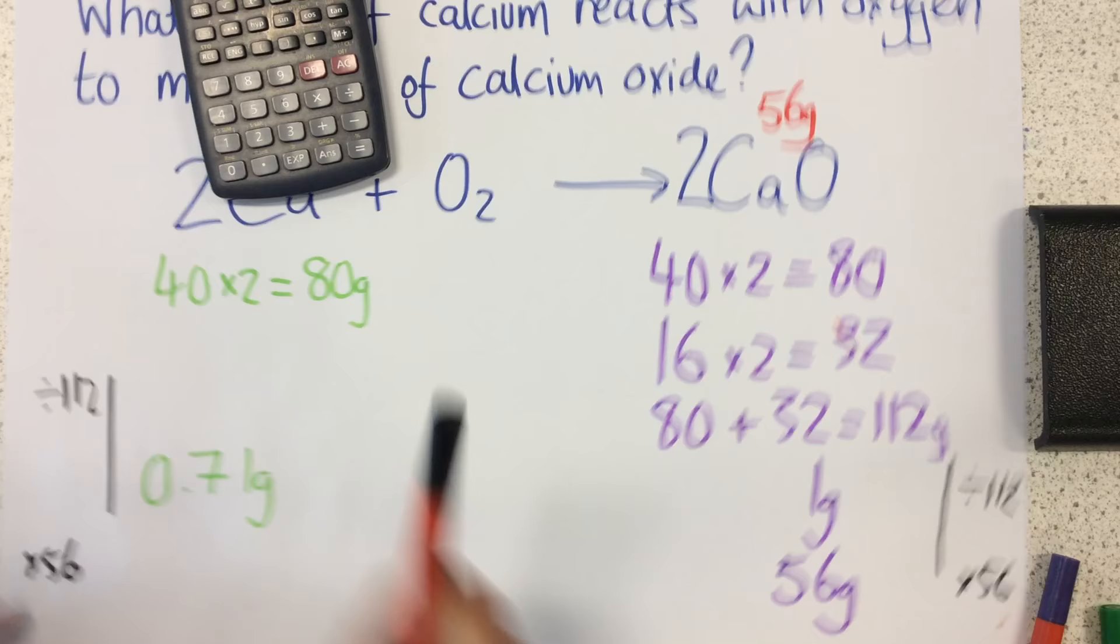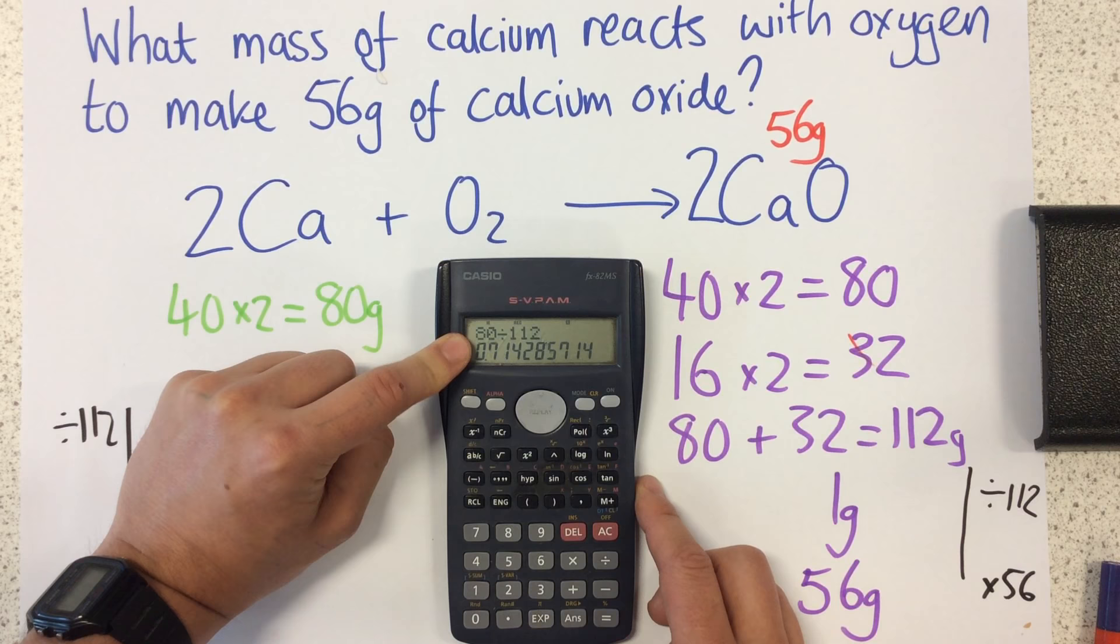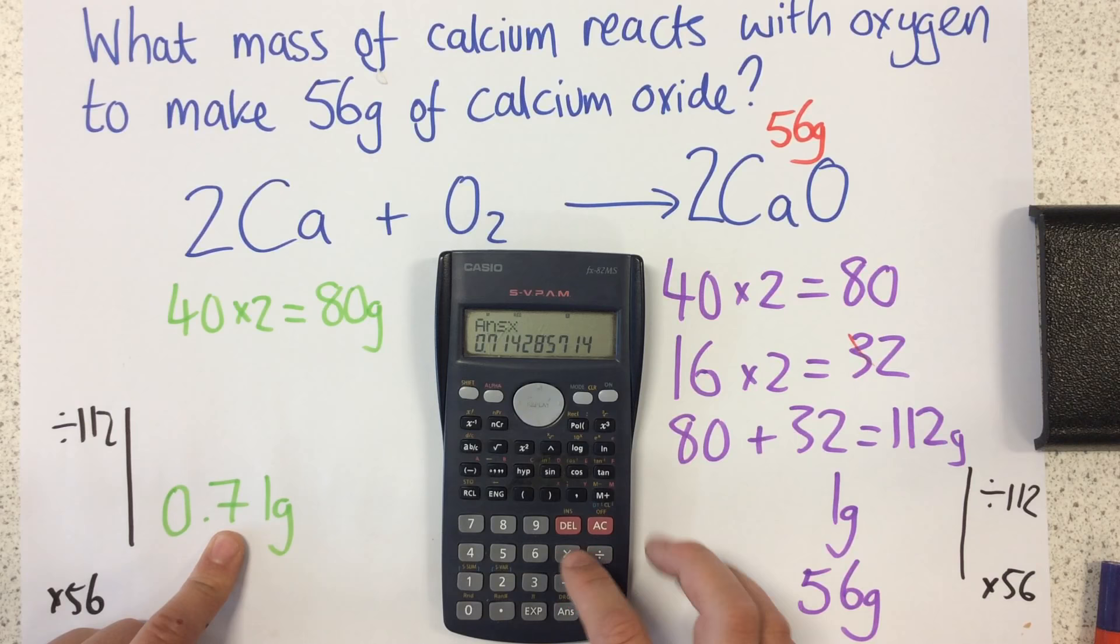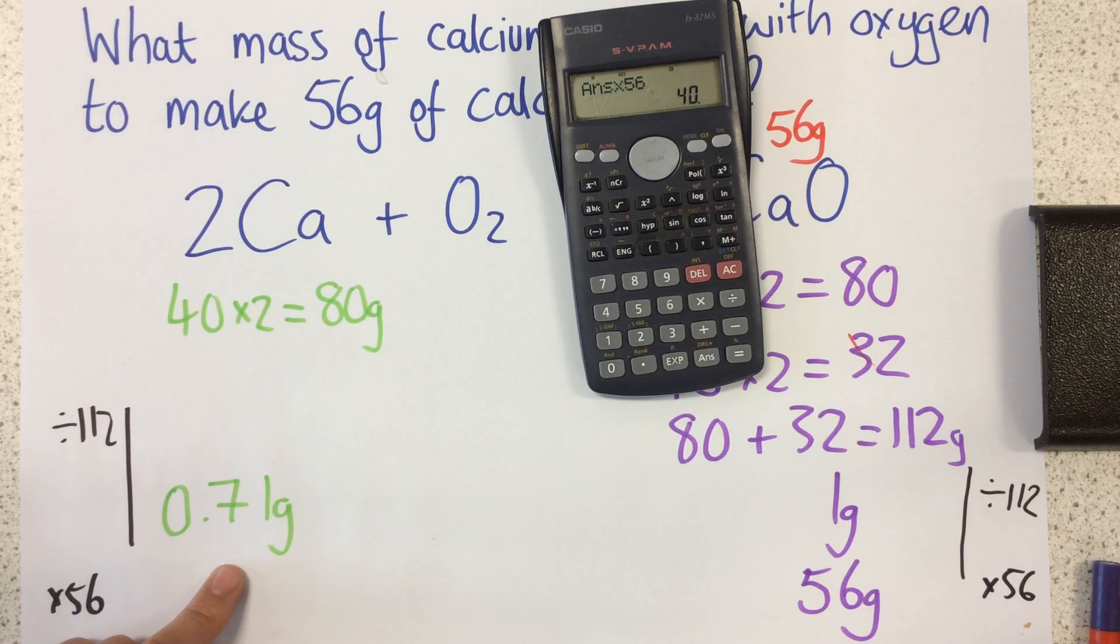So let's have a quick look. Notice how I've left that answer in my calculator. I want that exact answer. If I use this, I will get the wrong answer because I've rounded it too early. So if I now multiply this by 56, there we go, we can see that my answer is 40 grams.